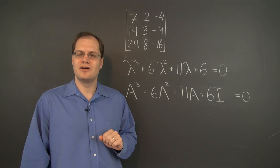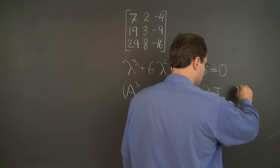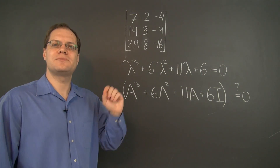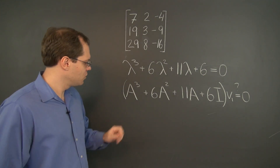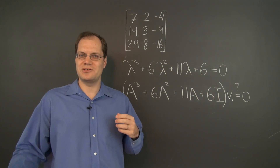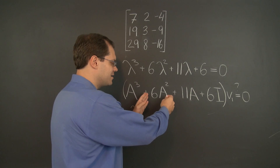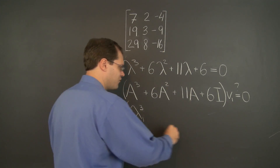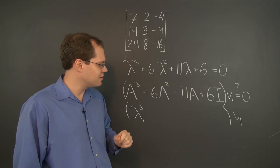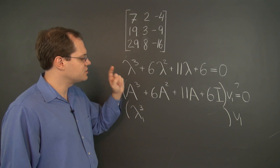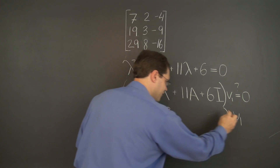Considering this special case of a full set of eigenvalues and eigenvectors, let's multiply this matrix — we don't yet know it's 0, so we'll put a question mark — by the first eigenvector V1. Applying A cubed to V1 gives lambda 1 cubed times V1. Similarly, A squared times V1 is lambda 1 squared times V1, so we get plus 6 lambda 1 squared V1. And A times V1 is lambda 1 V1, giving plus 11 lambda 1 V1.